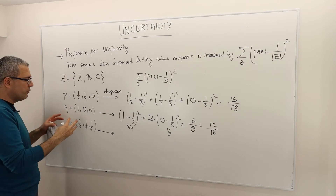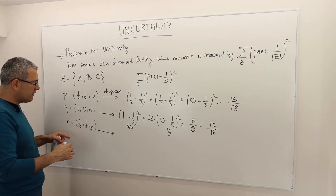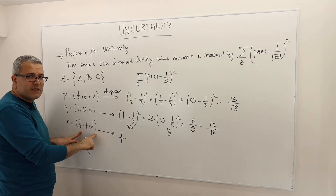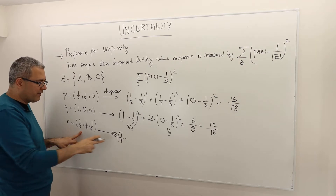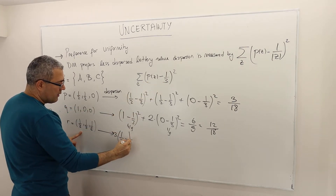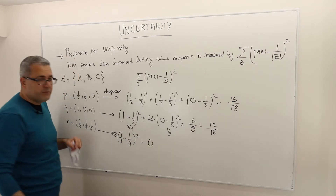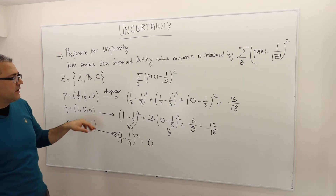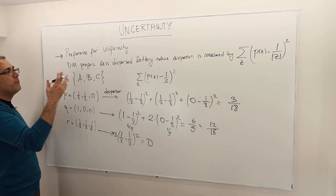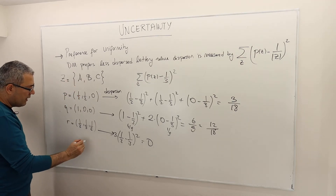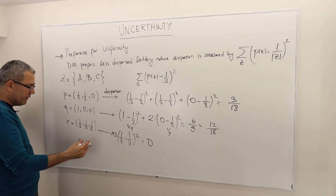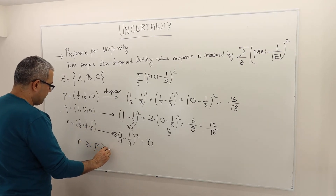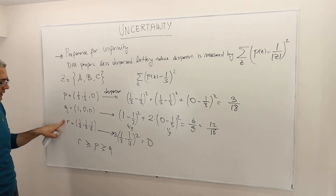For lottery R — the uniform distribution — the dispersion should be the least. Each outcome has probability 1/3, so each term is (1/3 minus 1/3) squared = 0, times 3 = 0. So the decision maker prefers the less dispersed lottery. R is the least dispersed, lottery two has the highest dispersion. Therefore R is strictly preferred to P, and P is at least as good as Q. So Q is the least preferred, then P, then R is the best.